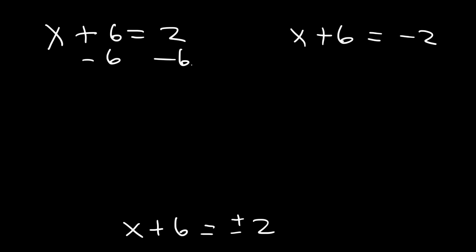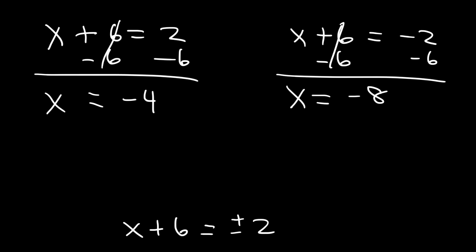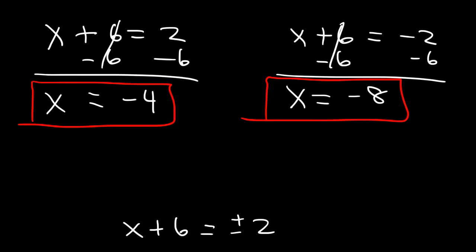So let's subtract 6 from both sides. 2 minus 6 is negative 4, and negative 2 minus 6 is negative 8. So therefore the two answers are x equals negative 4 and negative 8. And that's how you can solve quadratic equations by completing the square.